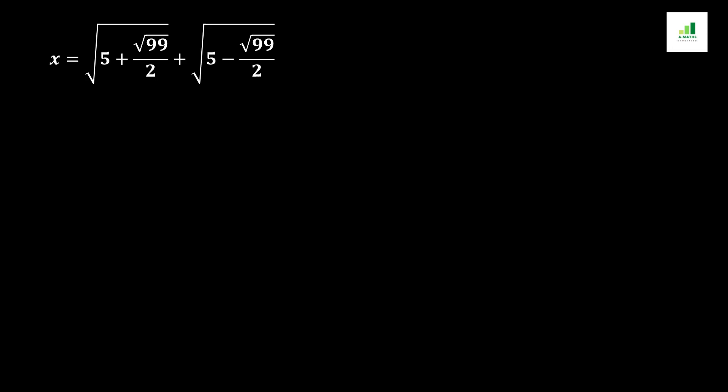Welcome to AMS. Today in this video we are going to solve a question for x. Our given question is x equals the square root of (5 + √99)/2 plus the square root of (5 − √99)/2.